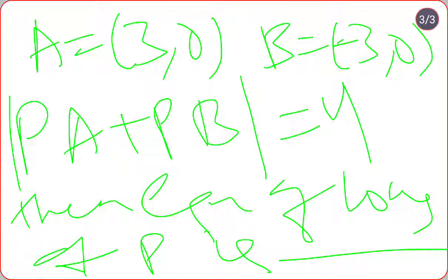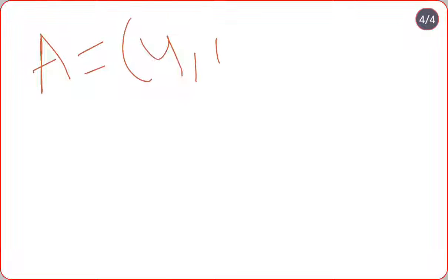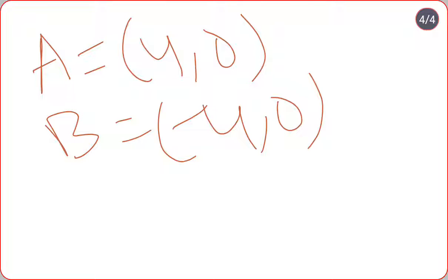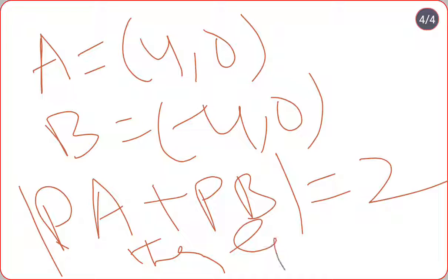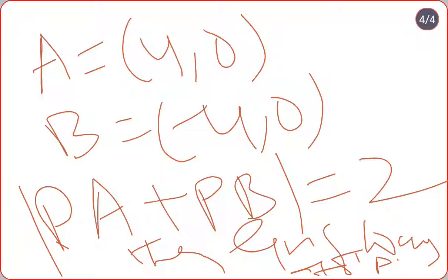Homework problem 2: A value is (4, 0), B value is (-4, 0), and |PA + PB| = 2. Find the equation of locus of P. Using the above shortcut, solve these two problems and give your answer in the comment section.